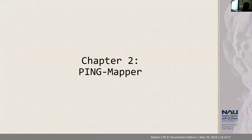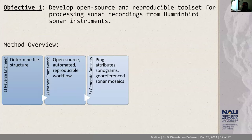Let's jump into chapter two, which is about PingMapper. Objective one is to develop an open source and reproducible toolset for processing sonar recordings from Humminbird sonar instruments. To do that, first we need to figure out how to reverse engineer the file in order to determine the file structure of these newer Humminbird systems. Second, develop an open source and automated workflow built in Python, and then finally export the data sets we need from the Humminbird recording.